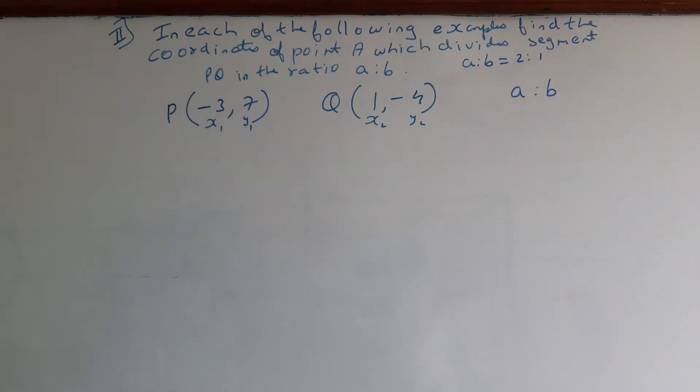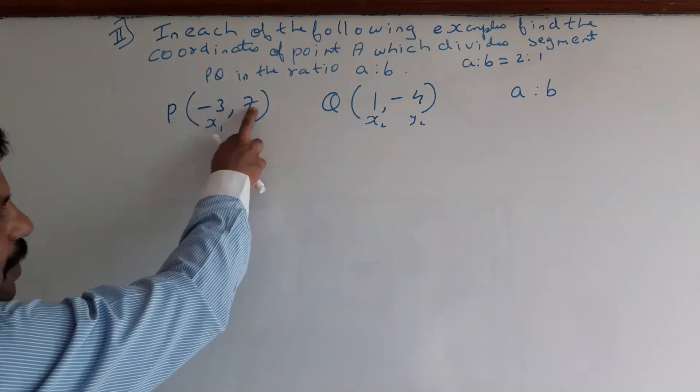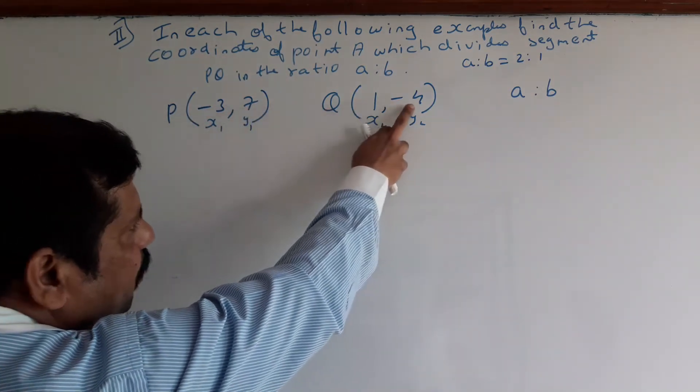Second question: In each of the following examples, find the coordinates of point A which divides the line segment PQ in the ratio a:b. a:b is equal to 2:1. P is equal to (-3, 7), Q is equal to (1, -4).